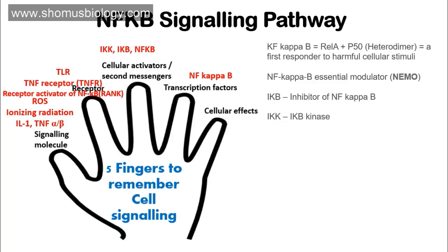The fourth important parameter is the transcription factor — NF-kappa B itself is the transcription factor. The fifth parameter is cellular effects, which include DNA transcription, cytokine production, and cell survival. DNA transcription is the most important effect of NF-kappa B signaling because NF-kappa B is a transcription factor whose primary job is transcribing genes and then producing proteins through translation.